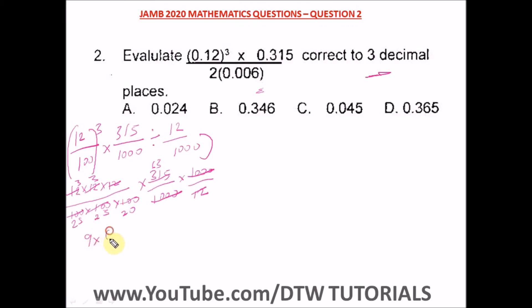We have 3 times 3 equals 9, times 63 over 125 times 25 times 20. This leaves us with 9 times 63 which equals 567 over 12,500.